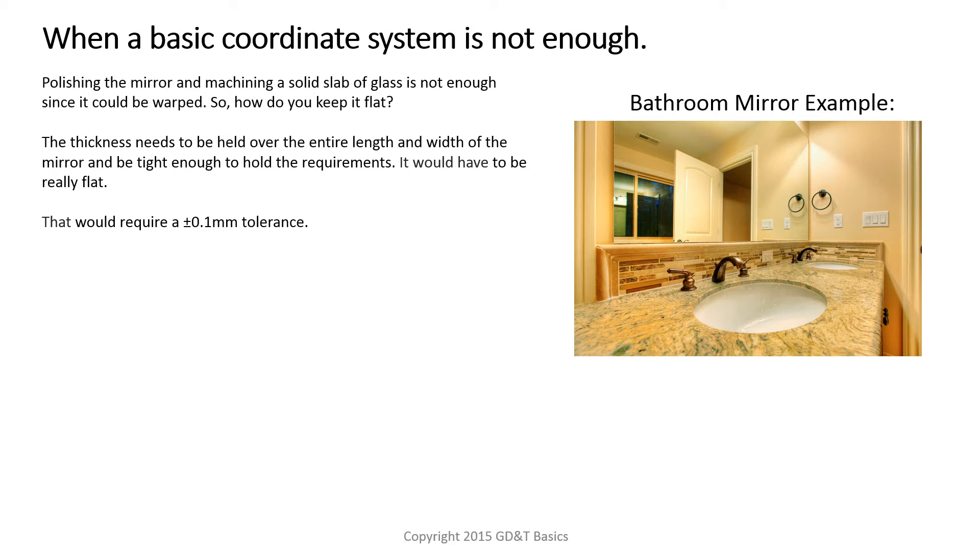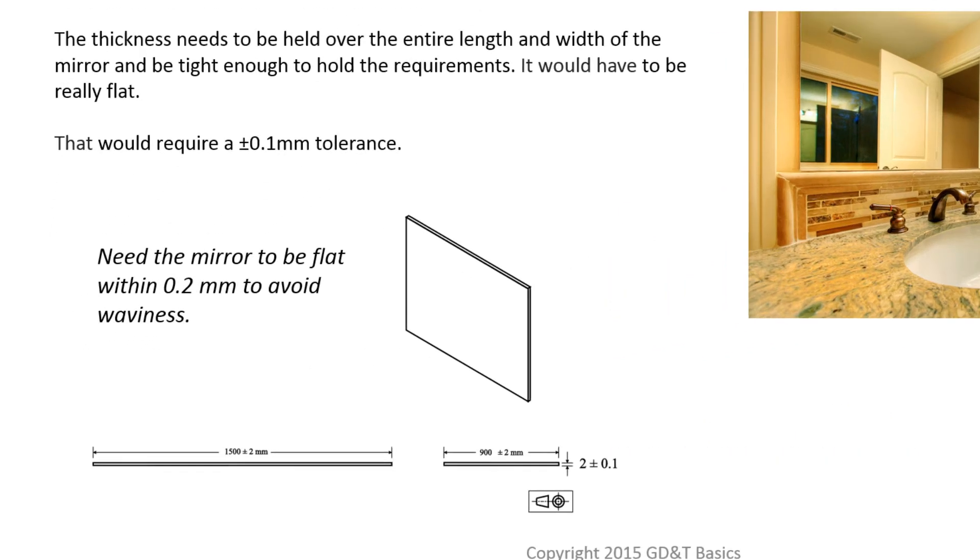If you are polishing the mirror and machining a solid slab of glass, it's not enough to just hold the tight thickness tolerance since it could be warped. How do you keep it flat? The thickness needs to be held over the entire length and width of the mirror to be tight enough to hold the requirements. It would have to be really flat. One way you could do this is to add a plus or minus 0.1 millimeter tolerance on the thickness of the mirror, just like this.